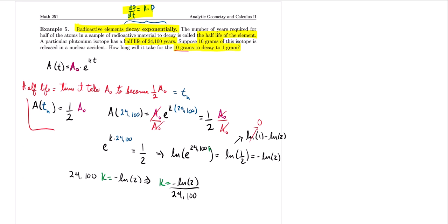You might have noticed that for a decay problem, you don't need to include the negative in your formula right away, because if you do the math properly the k value will come out negative on its own. The k value here is approximately −2.876 × 10⁻⁵, which is indeed negative — confirming this is decay, not growth.